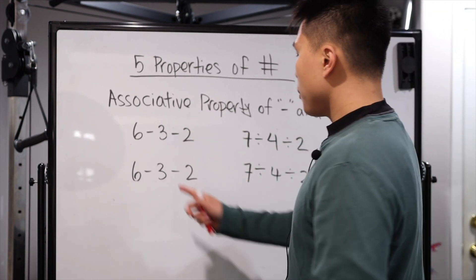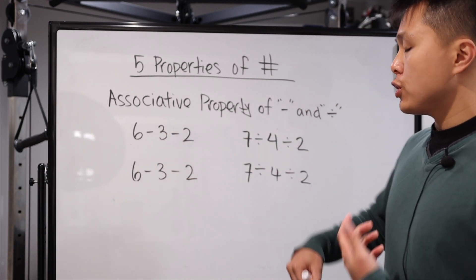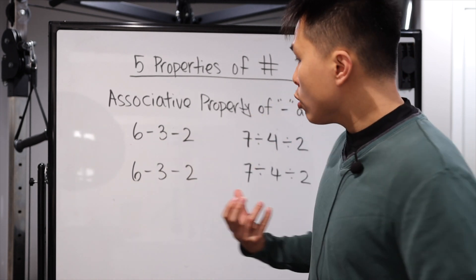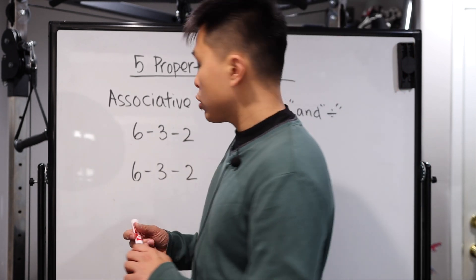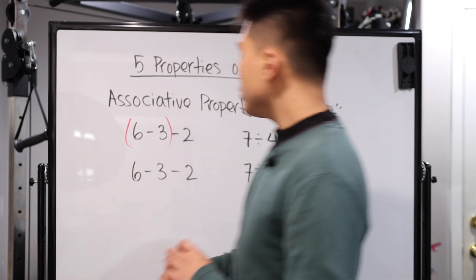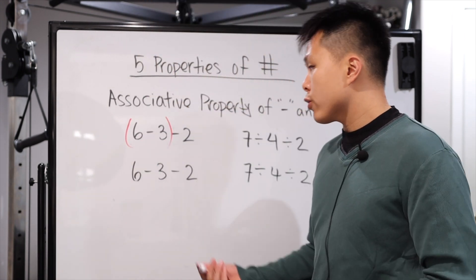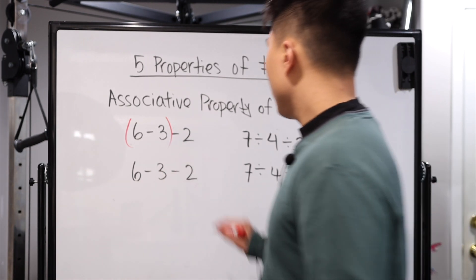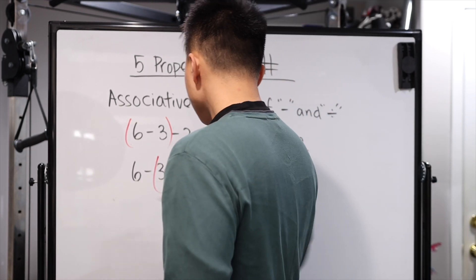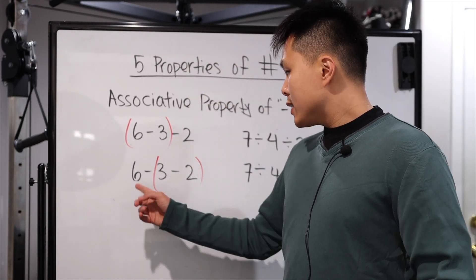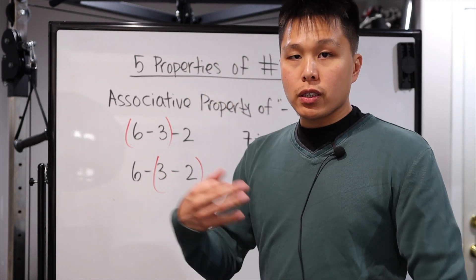Let's just say, for example, these are all now subtraction. These are all now division, and we're going to carry out the same thing. What if we choose to change the way we group the numbers, basically which one we solve first? For this one, if we choose six subtract three, which is going to be three, then subtract two, we get one. Whereas this one, three subtract two is one. Six subtract one is all of a sudden five.